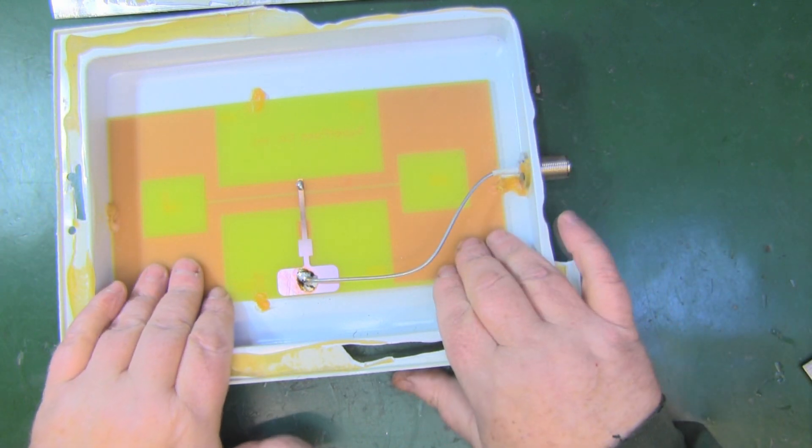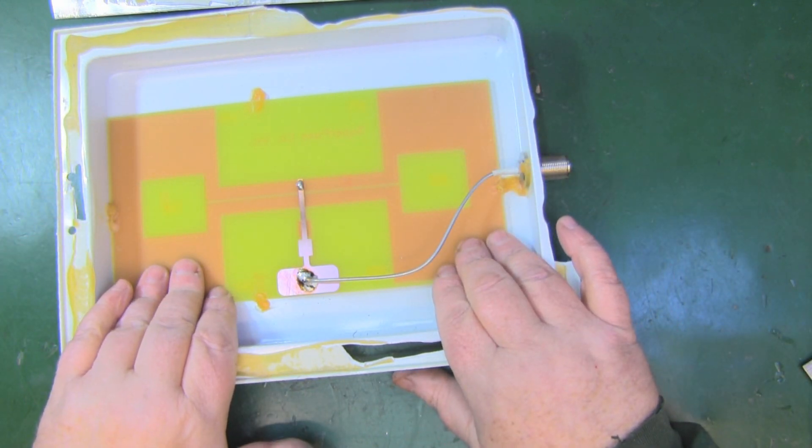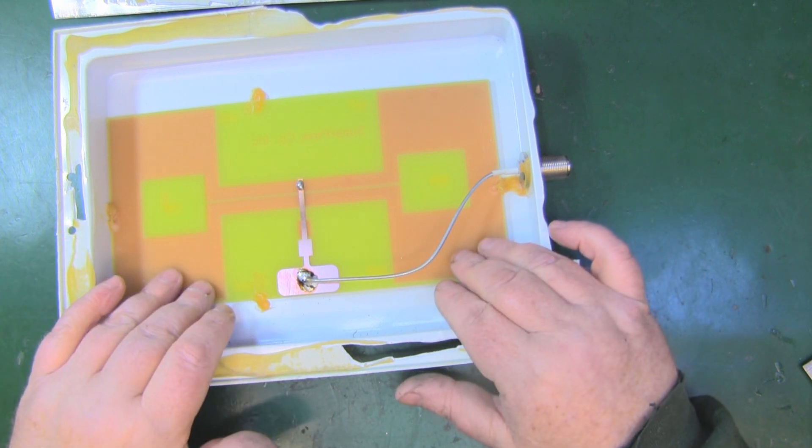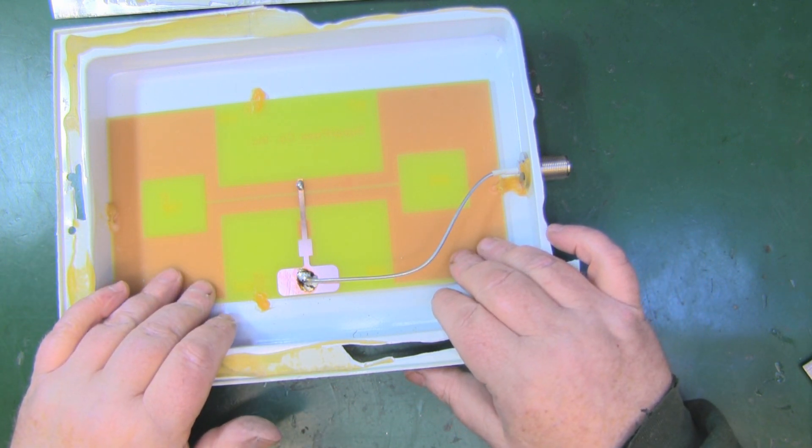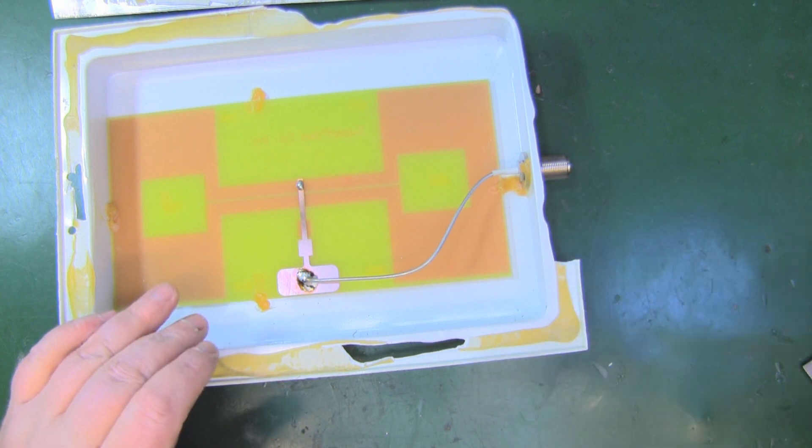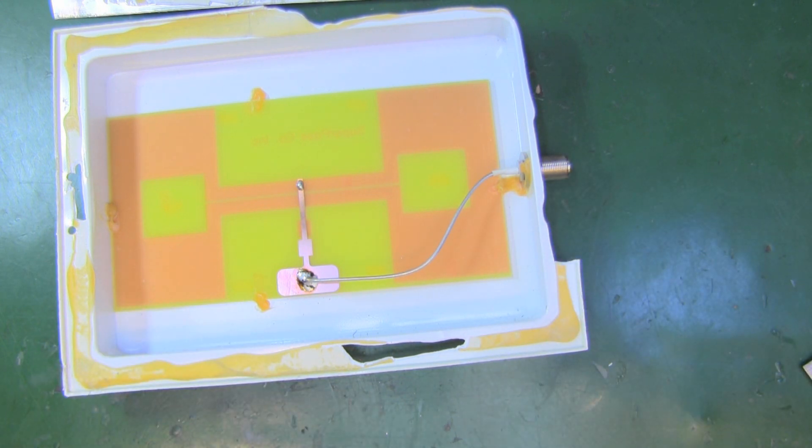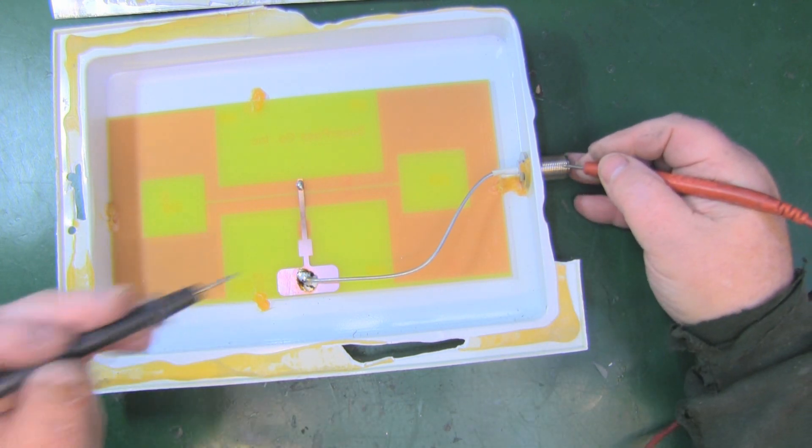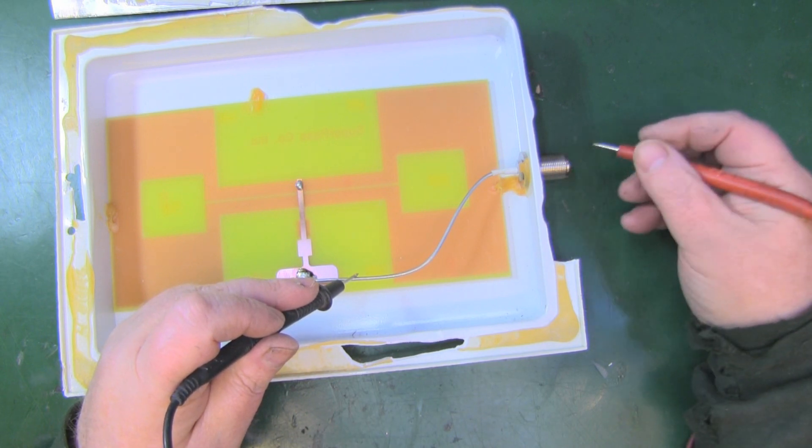Here we've got a dipole style main driven element. You've got your two lobes here and here. Remember it's horizontally polarized, this antenna.